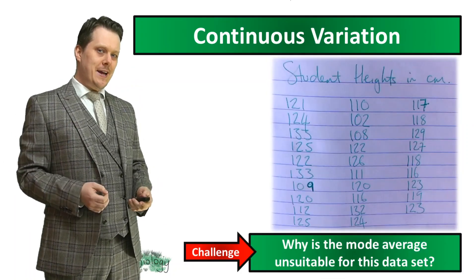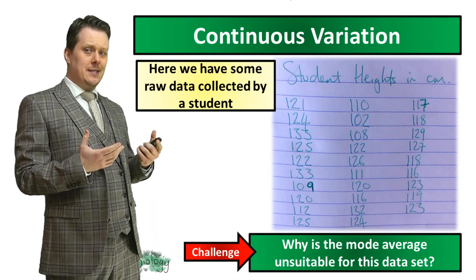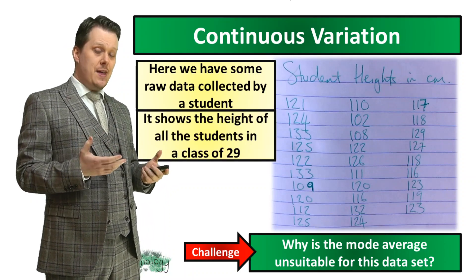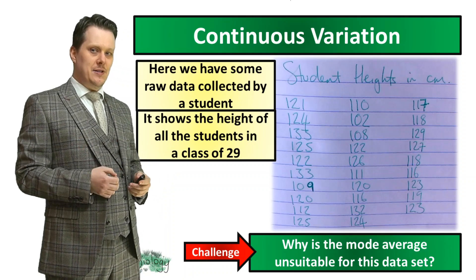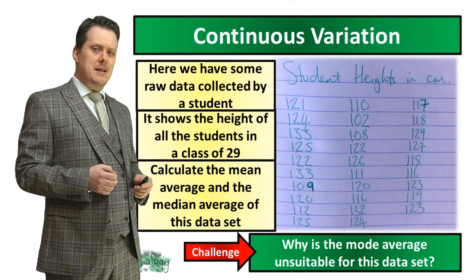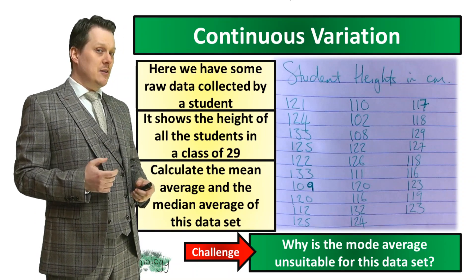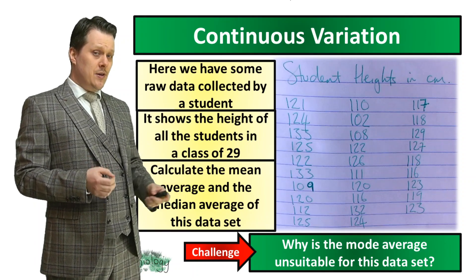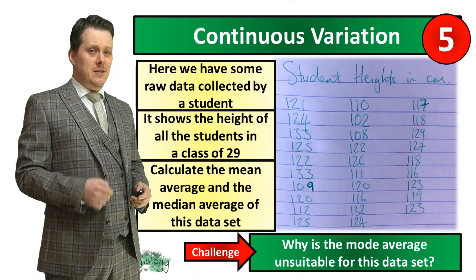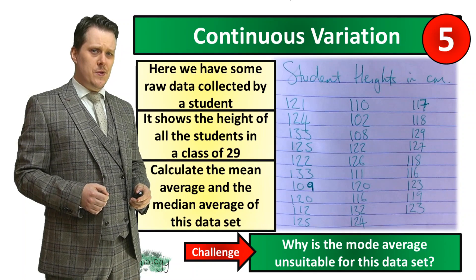So now we're going to look at a data set which shows some continuous variation. A student has collected raw data showing the height of all the students in their class — a total of 29 students. I want you to calculate the mean average and the median average of this data set. There are quite a lot of numbers, so make sure you check your answer after you've finished. Pause the video if you need more time.